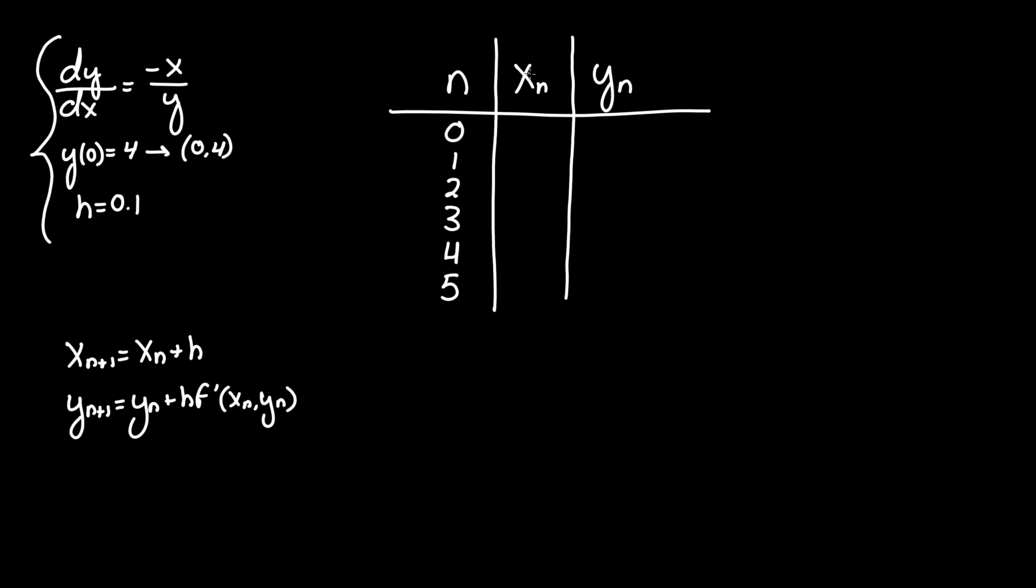So let's start off with x of n where we know the first value of x is zero given this data point here. Now to get x of n plus one, which would be zero plus one or x of one, you add zero, which was the previous value of x, plus the step size 0.1. 0 plus 0.1 is 0.1.